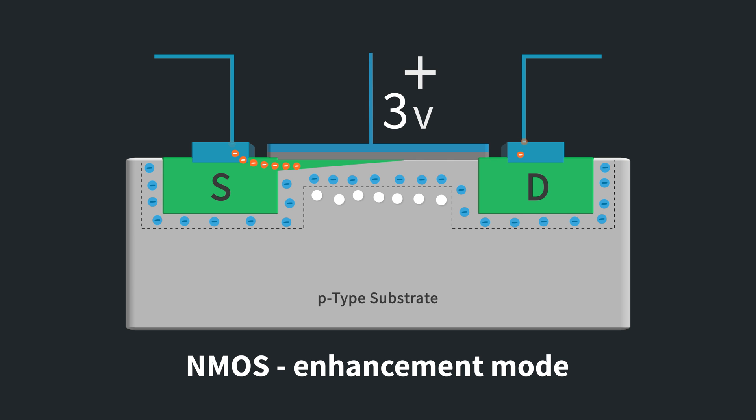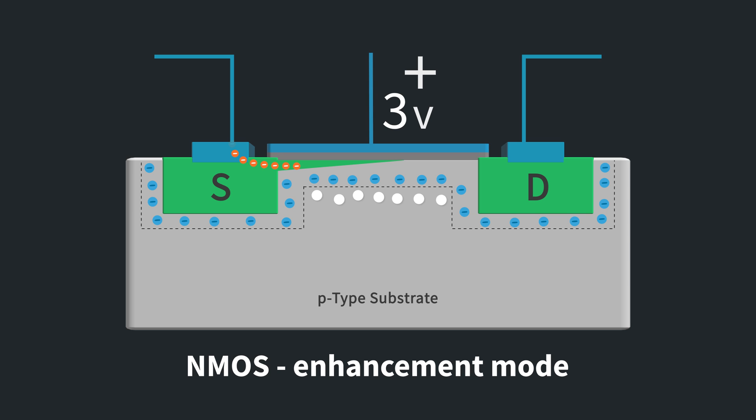Saturation always confused me because in my mind that meant the channel was saturated with free electrons. That is not the case, however. It means that the current is saturated and can't get any bigger. In saturation, the main factor limiting the current flow is the gate voltage, not the drain source voltage. Most applications of MOSFETs use them in this region, and if the drain source voltage is the same as the gate source voltage, you can assume you're in saturation.